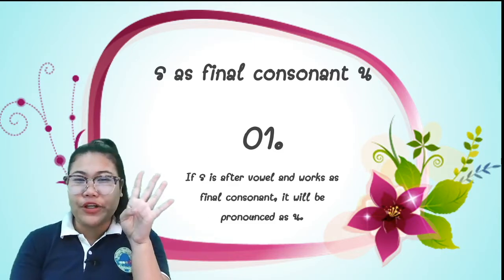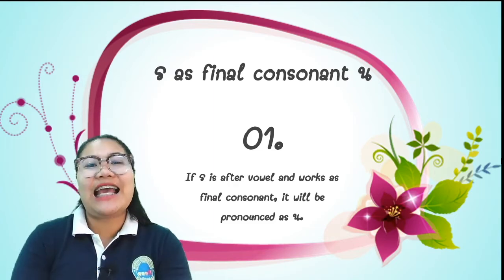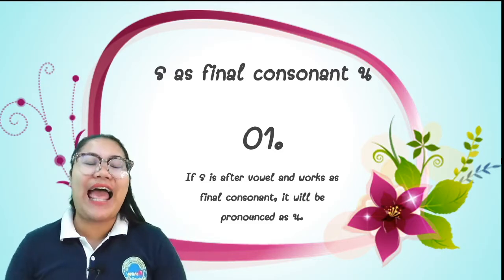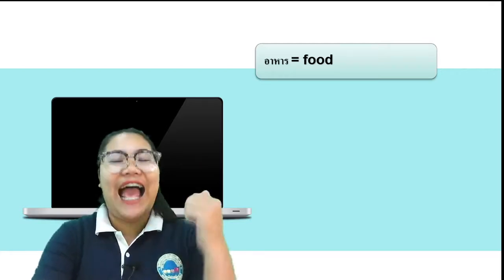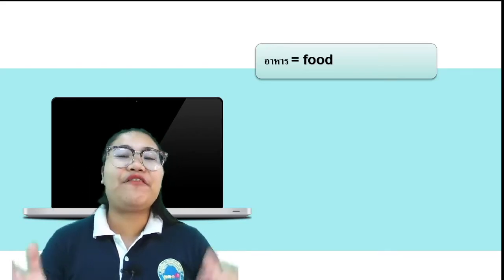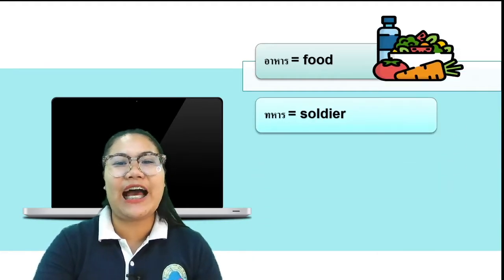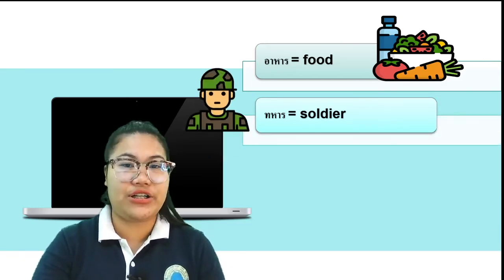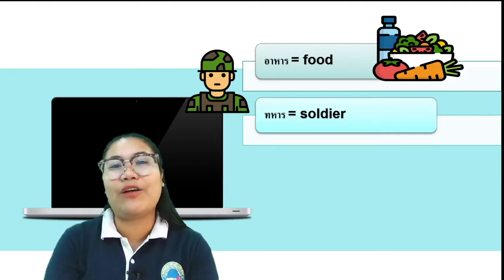We separate the rule of รอเรือร์ into four groups. This is the first one: รอเรือร์ as a final consonant pronounced as น. It is when รอเรือร์ comes after vowels and appears as a final consonant — it will be pronounced as น. Here is the example word อาหาร: รอเรือร์ is the final consonant, so we pronounce it as น. The word อาหาร means 'food.' Here is the word ทหาร, which means 'soldier' — รอเรือร์ at the end, the sound is น.